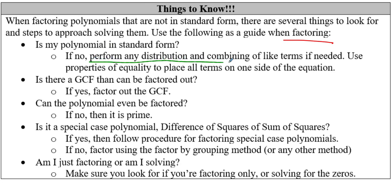If you are not in standard form, do we have any distribution or combining of like terms that we can do? We always want to do that first. If we see some parentheses, go ahead and distribute everything out and then see if we have something that we can factor. And then remember, we have those properties of equality that we learned when solving equations, because we want to put all the terms on one side of the equation. Then our next piece: is there a GCF that can be factored out? After we're in standard form, we want to look — if there is a GCF, we want to take that out.